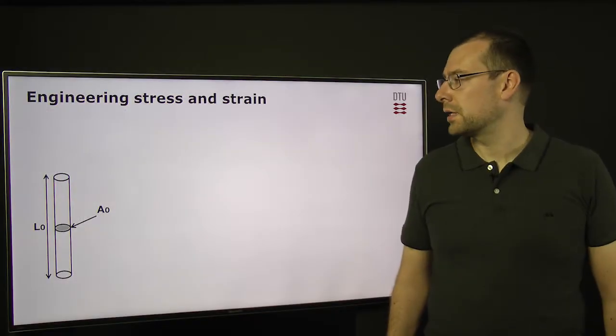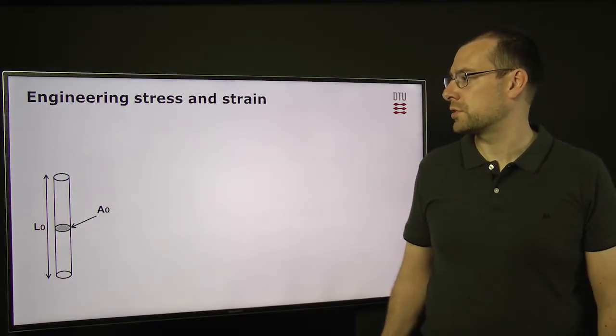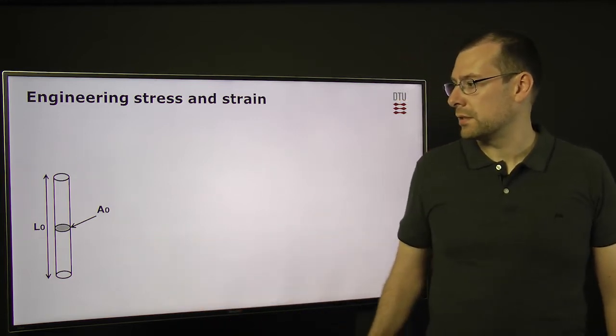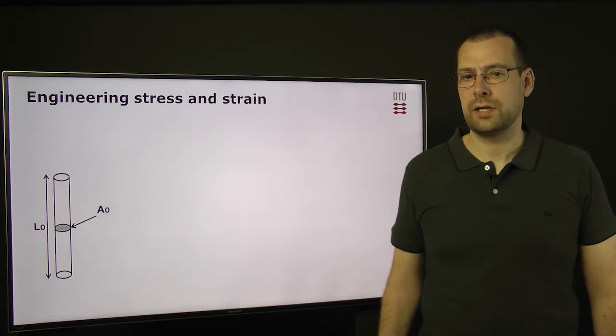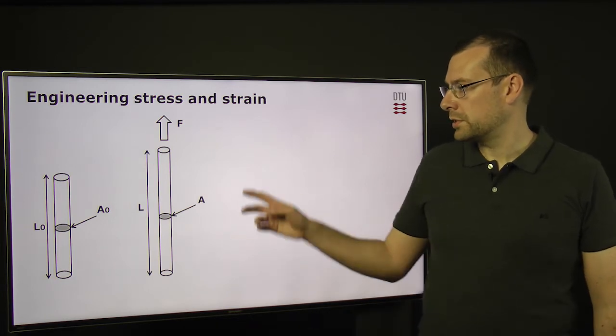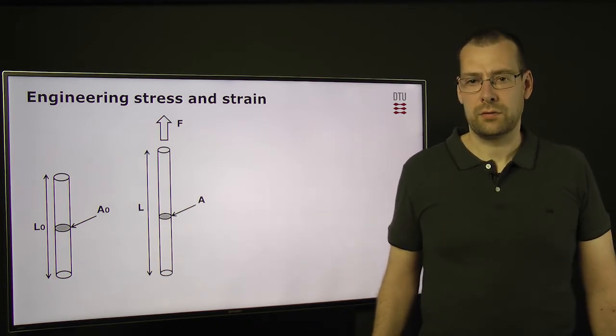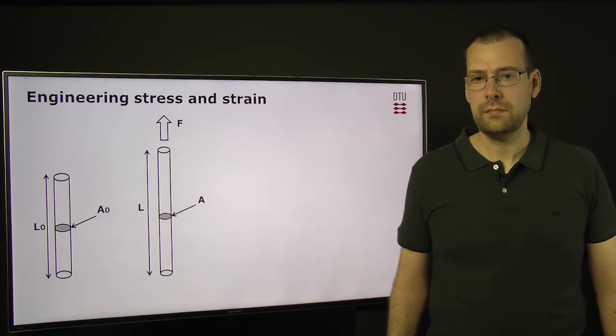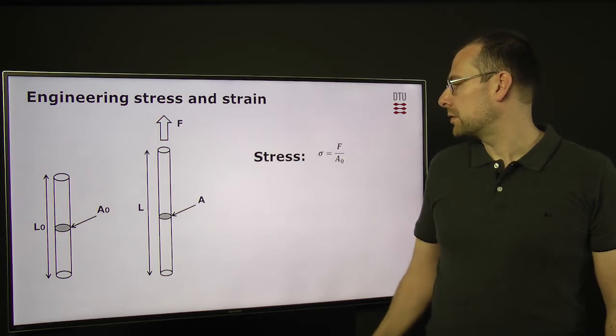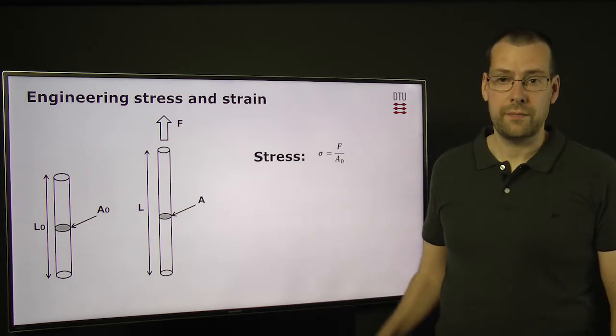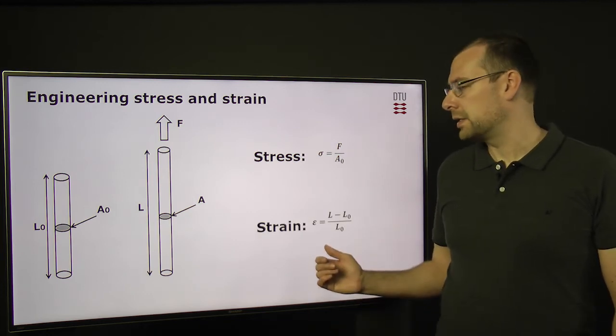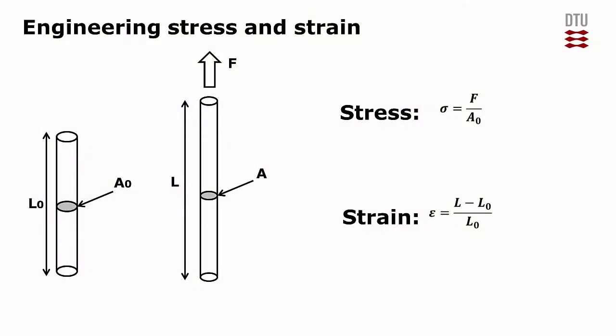So let's start looking at the basic equations for stress and strain, where we consider here a metallic rod which has the length L0 and the cross section area A0. If we apply a force to this rod, if we pull it, then the rod will become longer and thinner. The engineering stress is calculated by dividing the force with the original cross section area, while the engineering strain is calculated by dividing the increase in length with the original length.